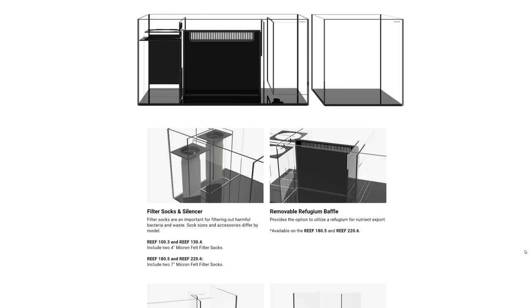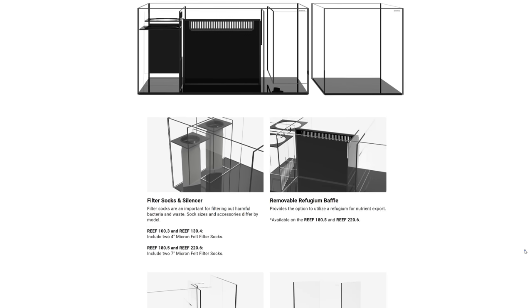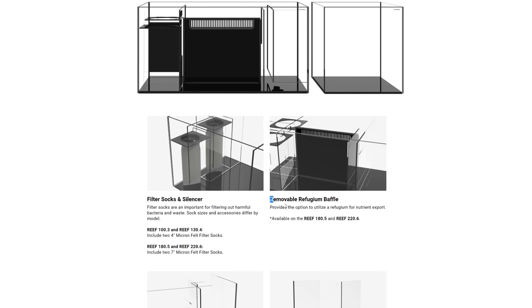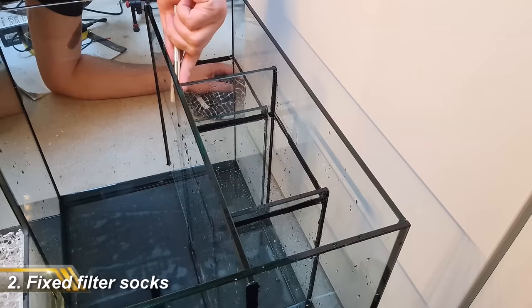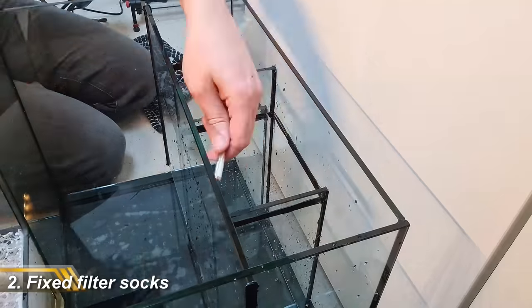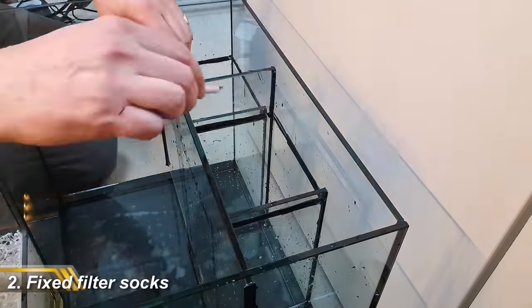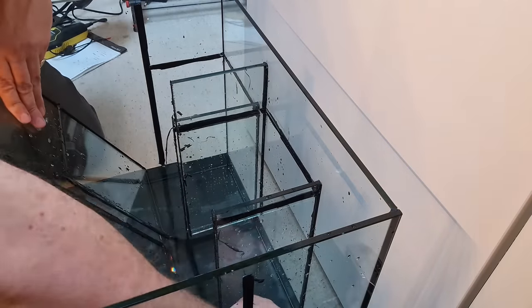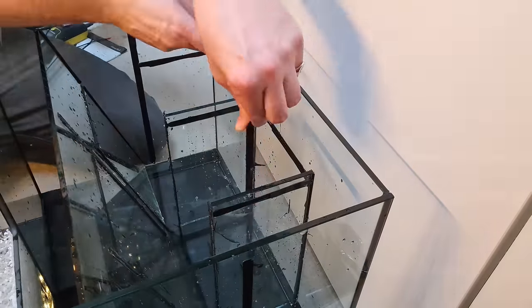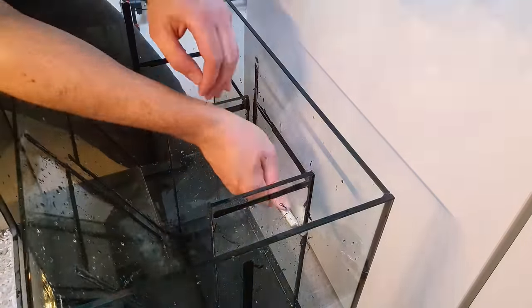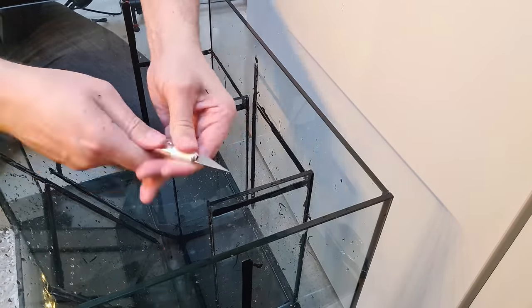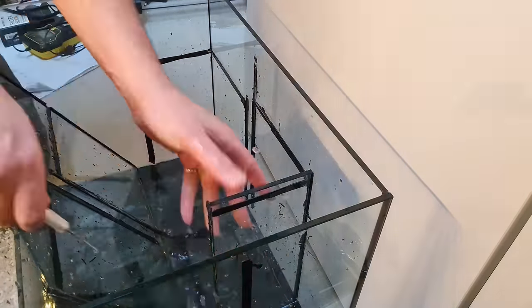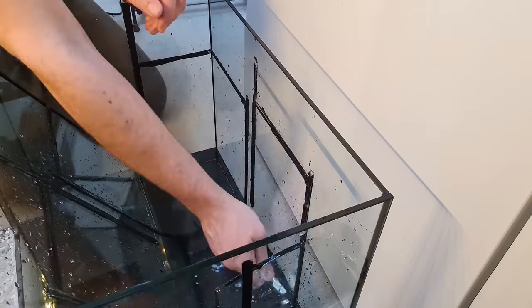In fact, you only get a refugium ready sump on Waterbox tanks of five feet or longer, which is a real shame as refugiums are really popular on three and four foot tanks. Next is that the filter sock section is fixed in place, which is fine if you like filter socks, but if not, you lose a lot of space for no benefit. And removing the filter sock section is a total pain in the behind, as I found out first hand. And with more and more people preferring automatic filter rollers, I wish aquarium companies would offer a removable filter sock section.